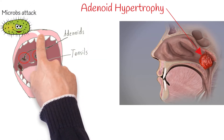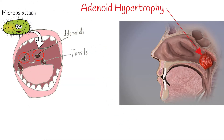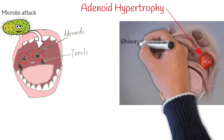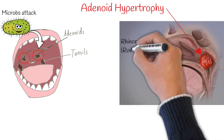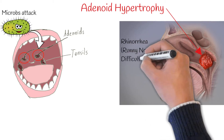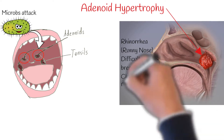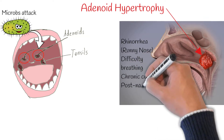Many types of bacterial and viral pathogens can infect adenoids and cause hypertrophy. Signs and symptoms can be different and depend on the severity of hypertrophy. Common complaints include rhinorrhea, difficulty breathing through the nose, and chronic cough.